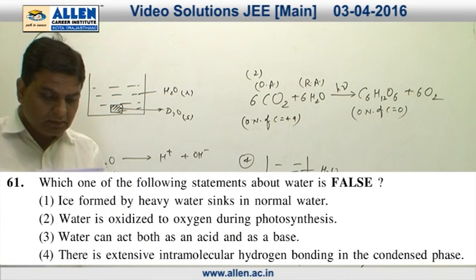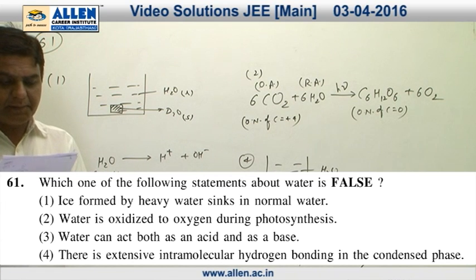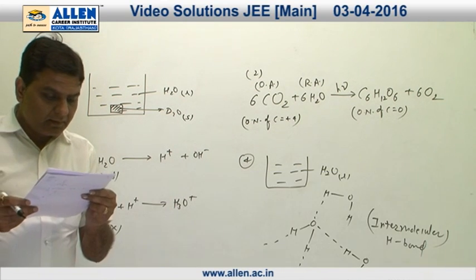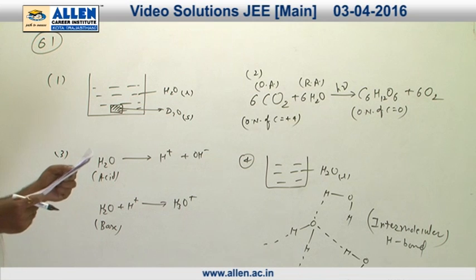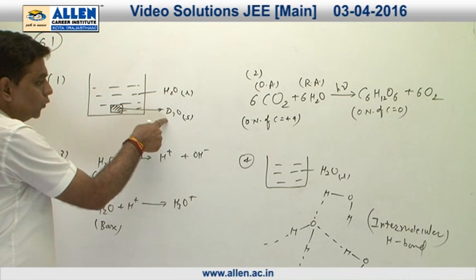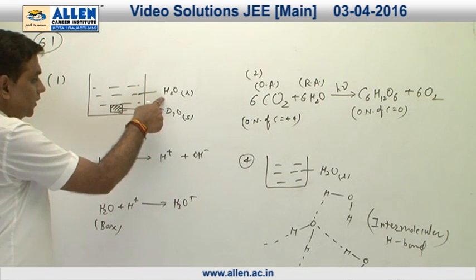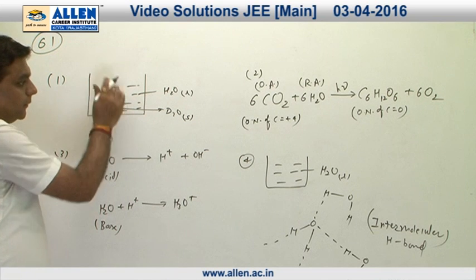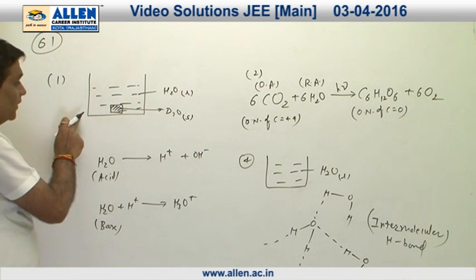Question 61 is about false statements about water. Statement one: ice formed by heavy water sinks in normal water. This is correct because ice formed by D2O is heavier than H2O liquid, so it sinks below the surface of water. Statement one is correct.